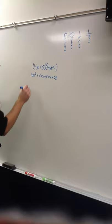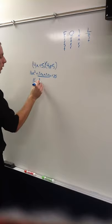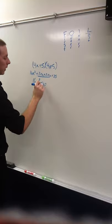So, you combine like terms now, right there. You get 16x squared plus 20, or, sorry, 40x plus 25.